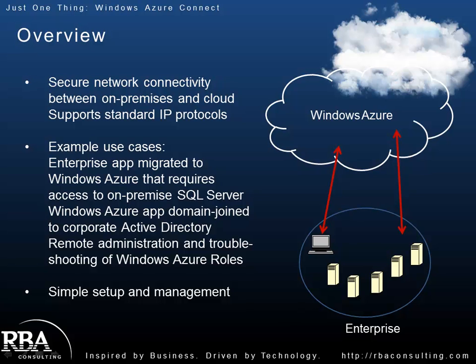Another common one is SQL Server. Currently, SQL Azure has a 50 gig limit. There are ways around it in terms of database design, such as sharding. However, maybe your applications aren't built for that yet, but the app itself could be in the cloud. You could use Windows Azure Connect to connect back to those SQL Server databases that are on-premise. This is also a good option for organizations that may not be able to store their data in the cloud due to various compliance reasons. They could certainly run the compute power in the cloud, but data needs to be on-prem. This enables that.